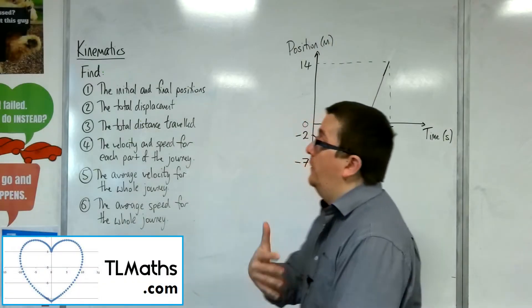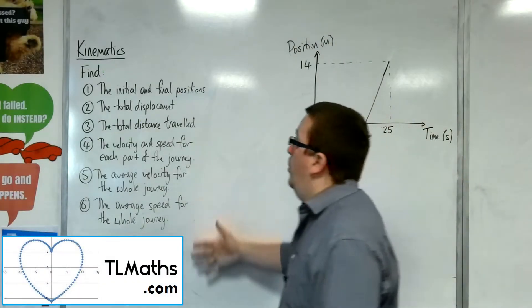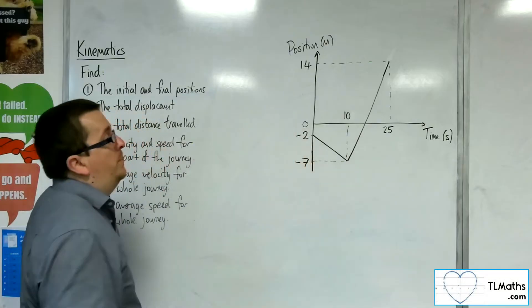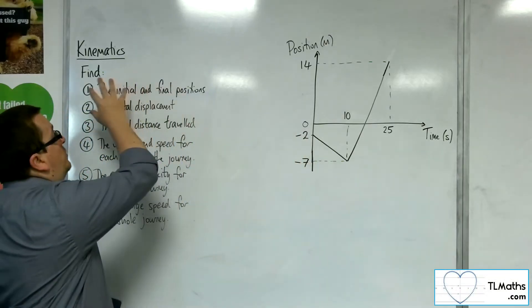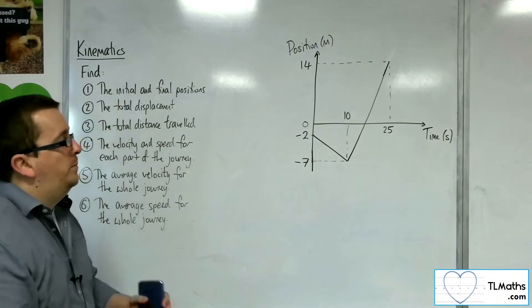We're going to go through a second example. We've got precisely the same questions, but now with a different position-time graph. So the first question: find the initial and final positions.